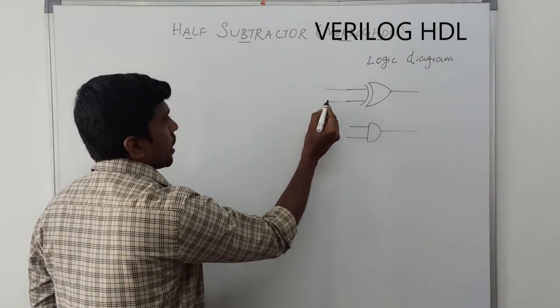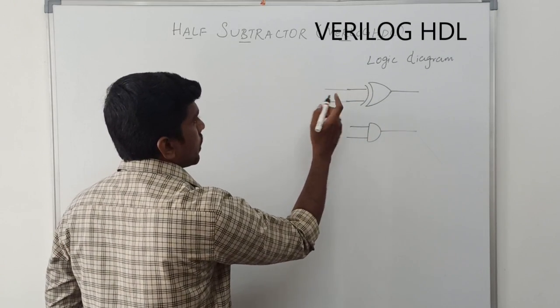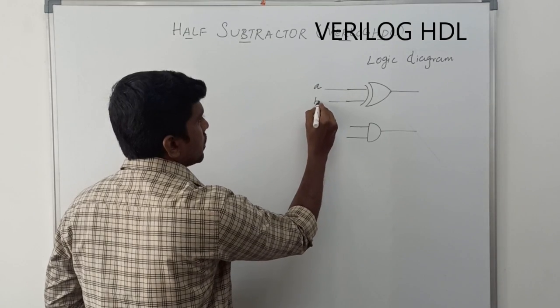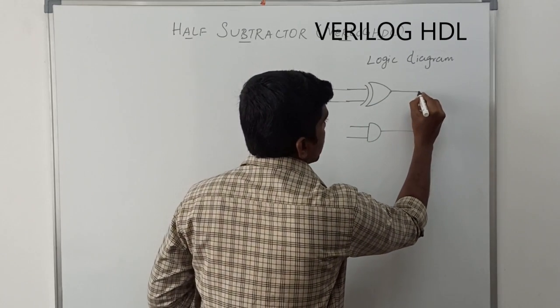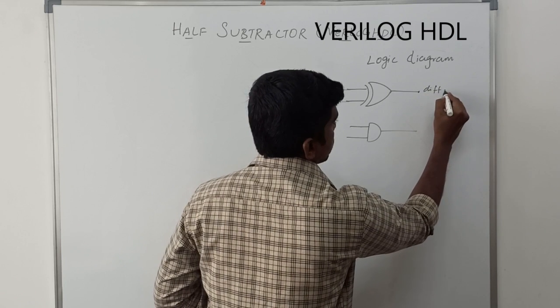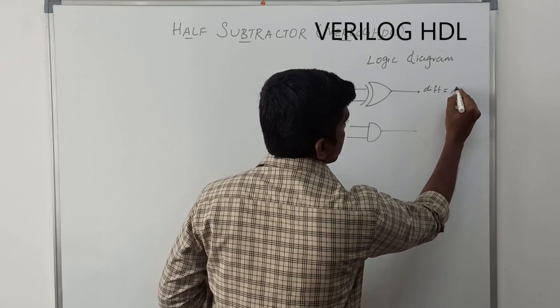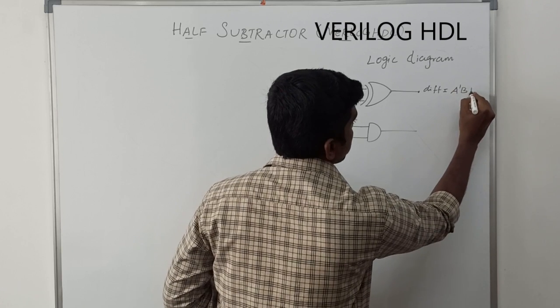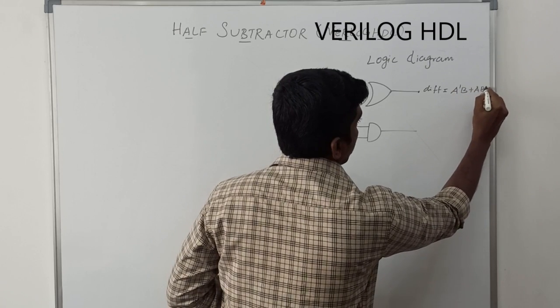One is XOR gate and another one is AND gate. First I assign the input variables for XOR gate, A and B. The output is difference. The corresponding equation, A bar B plus A B bar.